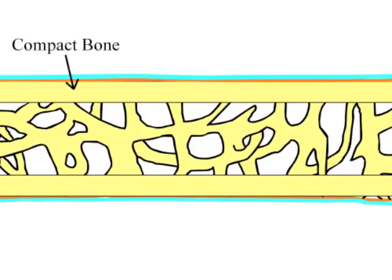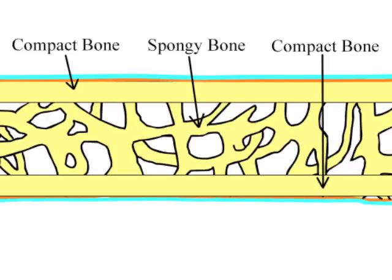This layering of compact bone, spongy bone, and compact bone again is the defining characteristic of bones categorized as flat bones.